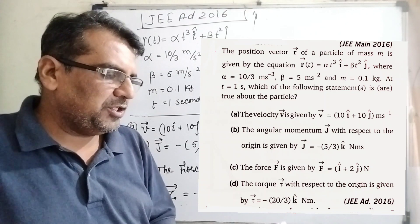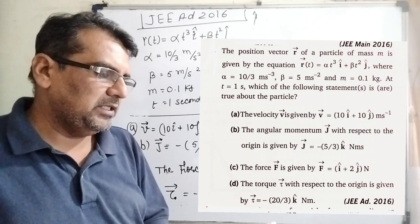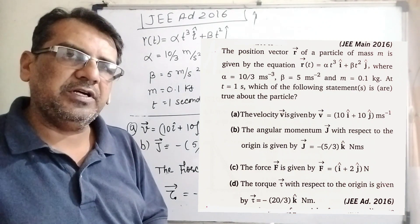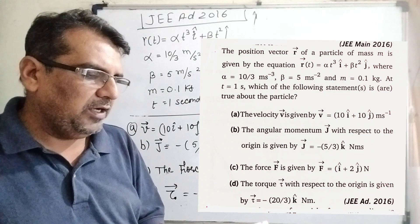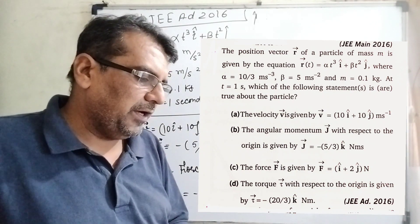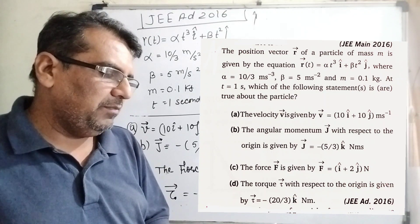What the question says: The position vector r of a particle of mass m is given by the equation r as a function of t equal to α t³ i unit vector plus β t² j unit vector.